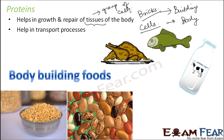All food items rich in proteins — whether pulses, fish, or other protein-rich sources — are called body-building foods, because they do not directly provide energy but help build our body. Without tissues, our body formation would not happen, and proteins are essential for the growth and repair of those tissues.